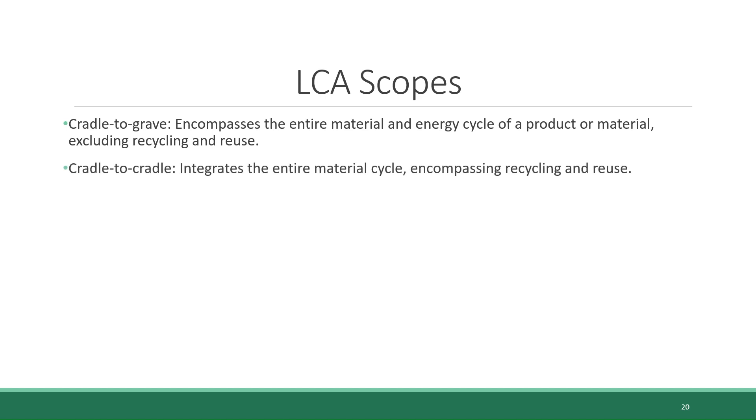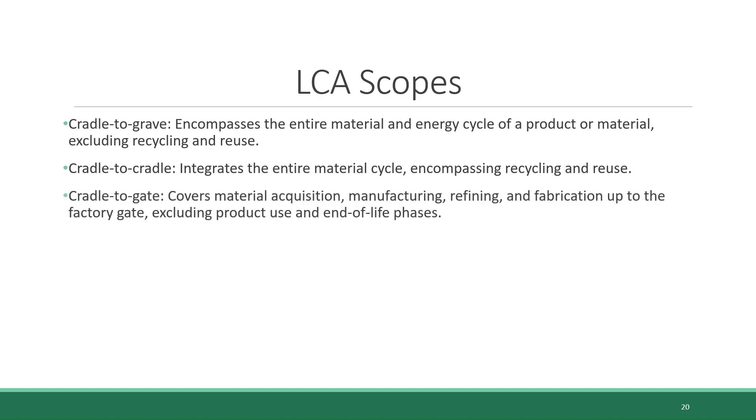Cradle to cradle integrates the entire material cycle, covering recycling and reuse, along with other stages. Cradle to gate focuses on material acquisition, manufacturing, refining, and fabrication up to the factory gate. However, it does not include the actual product use and end-of-life phases. Gate to gate narrows its focus to a specific additional process or new process or material within the product chain, providing a partial life cycle assessment.